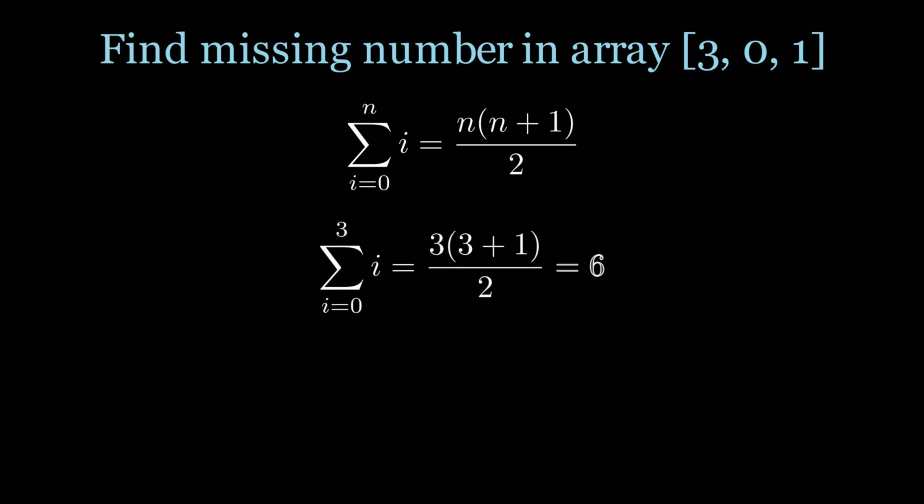So in this case, if n is 3, that means the sum I expect is 3 times 4 divided by 2, which is 6. Now what's the sum of the current array? Well, the sum of the current array is 4. And so all we have to do is subtract these two values. The missing number is 6 minus 4, which is 2.